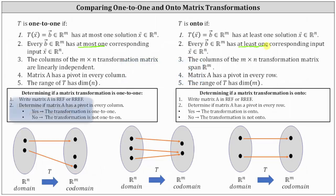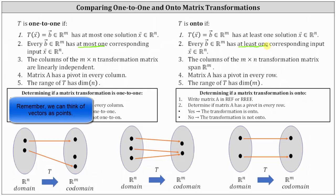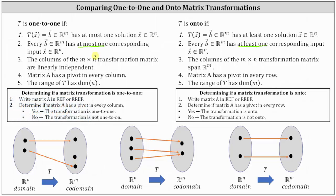Looking at the first mapping, the three vectors b in Rm have either one corresponding input vector or zero corresponding input vectors. This satisfies the definition of every vector in Rm having at most one corresponding input vector, so this is a one-to-one transformation. However, it does not satisfy the requirement for an onto transformation because the middle vector does not have a corresponding input vector. Therefore the transformation is only one-to-one, not onto.